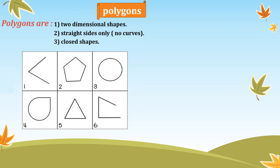To understand more, let's look at some examples. The first shape — is it a polygon? It's a 2D shape with straight sides and no curves, but it's not closed — it's open. So it's not a polygon. Number two: 2D shape, straight sides only, and closed — so it's a polygon. Number three: not a polygon, because it's curved. Number four: not a polygon because it has a curve.